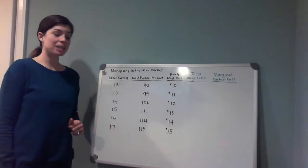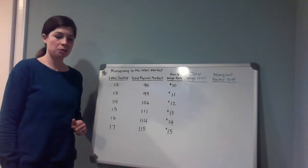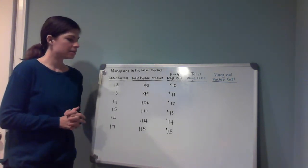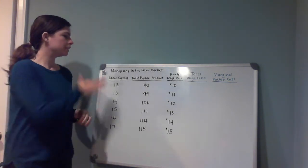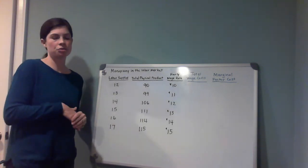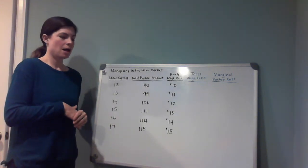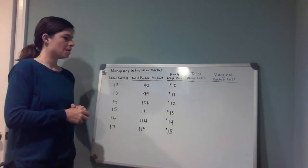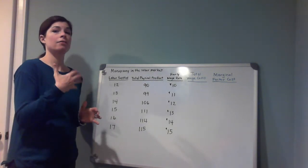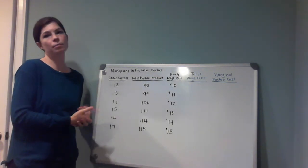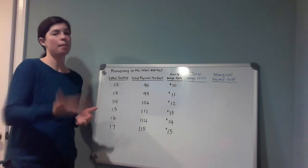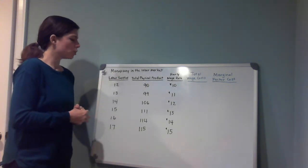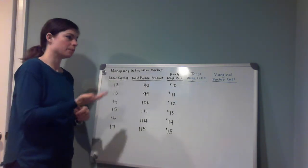The next problem is from chapter 29 and it's a quick analysis of a different kind of market we haven't been introduced to until now — it's called a monopsony. This is a market where a buyer of an input is the only buyer of that input, so they have a monopoly on buying it. We call it a monopsony, and in this case it's a monopsony in the labor market.